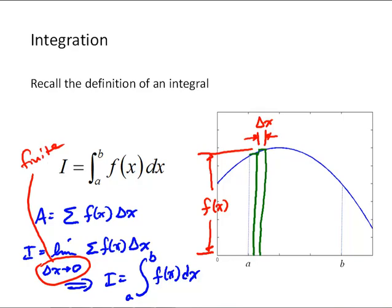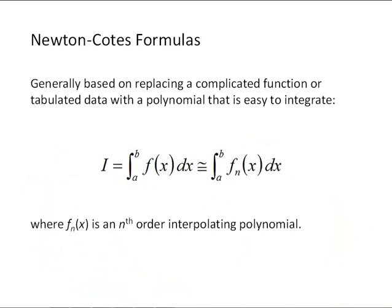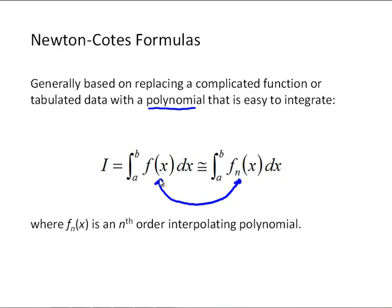So let's now get into the Newton-Cotes approach for doing this. The Newton-Cotes approach is to replace the function or tabulated data that's in the integrand with a polynomial. Polynomials are easy to integrate, so we'll take that function and replace it with some nth order polynomial. We can use our earlier material on interpolating polynomials to do this.